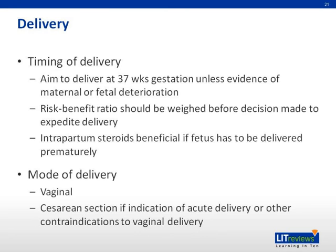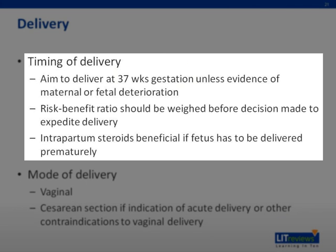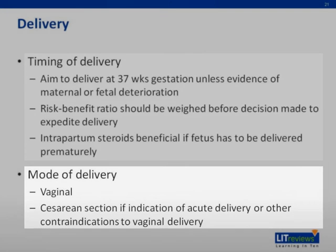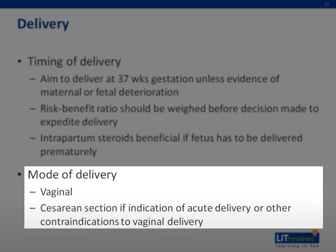The definitive treatment of hypertensive disorders in pregnancy is delivery. The optimal time to delivery is usually at 37 weeks gestation, unless there is evidence of maternal or fetal deterioration. The risk-benefit ratio should be weighed before any decision is made to expedite delivery. Intrapartum steroids are beneficial if the fetus has to be delivered prematurely. The mode of delivery may be either vaginal or via C-section, the latter usually if there is an indication of acute delivery or other contraindications to vaginal delivery.